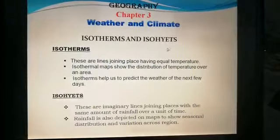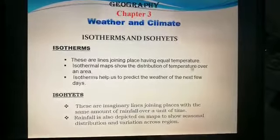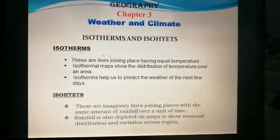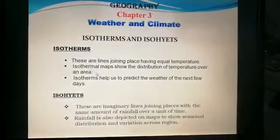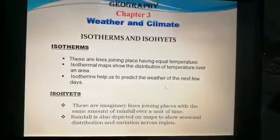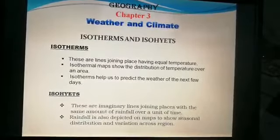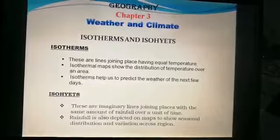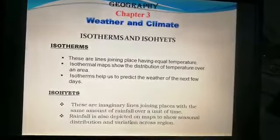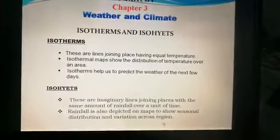Isotherms and isohyets. Isotherms are lines joining places having equal temperature. An isothermal map shows the distribution of temperature over an area, and isotherms help us predict the weather of the next few days. Isohyets are imaginary lines joining places with the same amount of rainfall over a unit of time. Rainfall is always depicted on a map to show seasonal distribution and variation across a region.